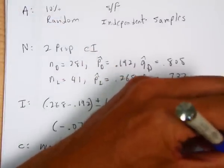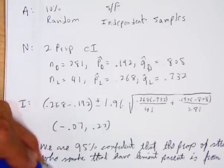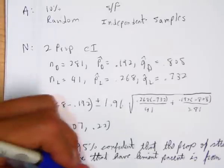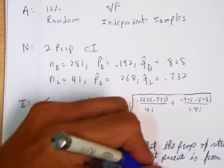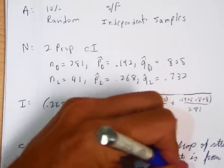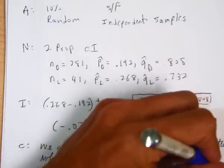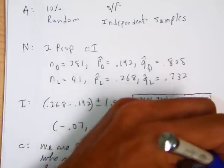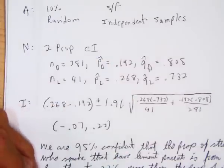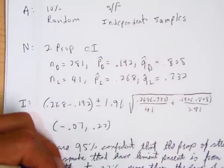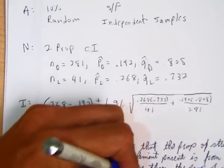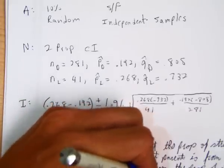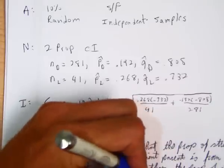7% less than to 22% more than 7% less than to 22% more than the proportion of students who smoke that have disapproving parents.